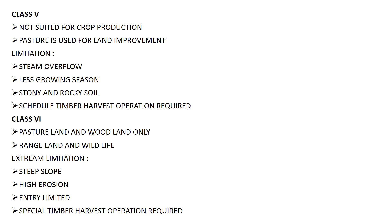In Class 6 land, there is only pasture and you can grow wood — meaning forest trees — and only fodder trees. This land is dedicated to wildlife, rangeland, and forest land. The reason we dedicate this land to wildlife and not agriculture is because there are extreme limitations like steep slopes, high erosion, and limited entry. Special timber harvest operations — not just scheduled, but special — are required here, and the public is not allowed.